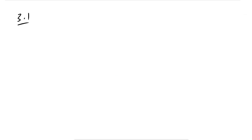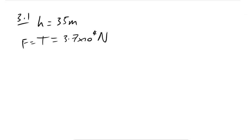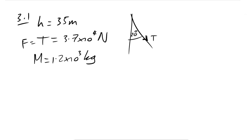Now a reverse bungee question. We have a height of 35 m — whenever you're given a height there's probably energy conservation involved. The tension in each rope is 3.7 × 10⁴ N, each rope makes an angle of 20 degrees, and the total mass is 1.2 × 10³ kg. We need to show the force exerted by the clamp is about 6 × 10⁴ N.